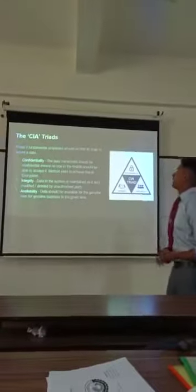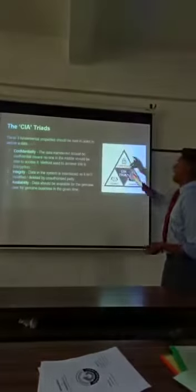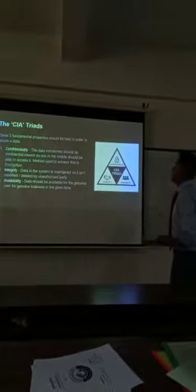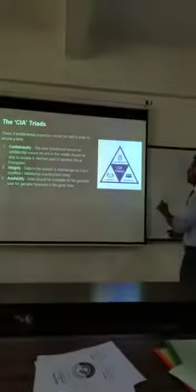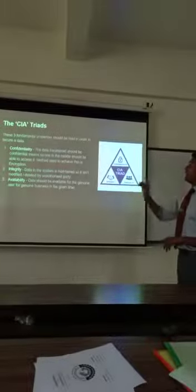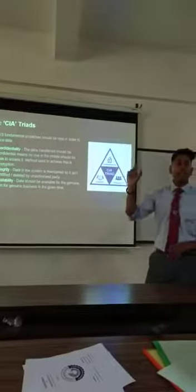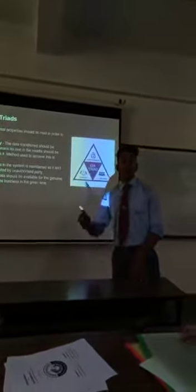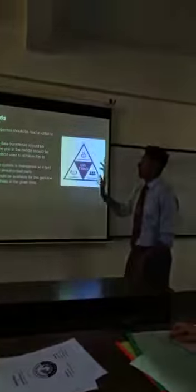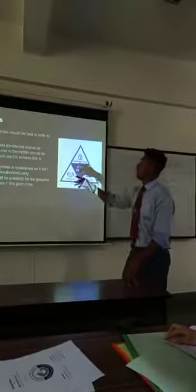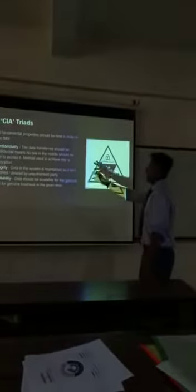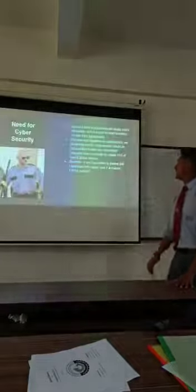To protect it, the CIA triad — these three fundamental properties should be met in order to ensure security. These three CIA triad properties secure your data. We need to look at confidentiality, integrity, and availability.